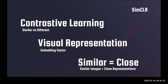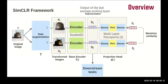Inspired by recent advancements in discriminative approaches, the researchers proposed SimCLR, a simple framework for contrastive learning of visual representations. The goal of contrastive learning is to teach the model to recognize what is similar and what is different, by enforcing the visual representations of similar images to be close to each other in the feature space. Visual representation here refers to the embedding vector, which is the result of feeding input images through the neural network.